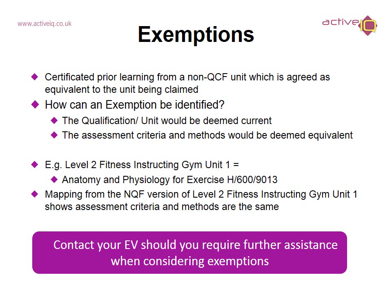Exemptions: certificated prior learning from a non-QCF unit which is agreed as equivalent to the unit being claimed. So how can an exemption be identified? Firstly, the qualification or unit would be deemed current — so it's up to date and relevant. The assessment criteria and methods would also be deemed equivalent — so they are the same. For example, the learner is completing the level 2 fitness instructing gym qualification, unit 1, anatomy and physiology for exercise. You would need to map from the NQF version of the level 2 fitness instructing gym unit 1 which the learner has previously completed, in which it shows assessment criteria and methods are the same, so this would be deemed as an exemption. Contact your EV should you require further assistance when considering exemptions.